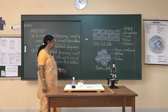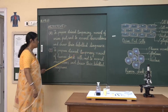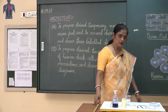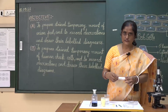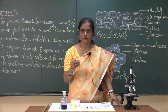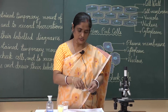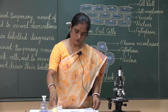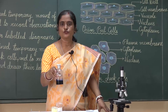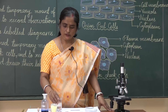Let us continue with the second part of the same objective — to prepare a temporary mount of human cheek cells and to record observations and draw their labelled diagrams. For this we need a slide, a toothpick, thin cover slips, and a stain. This time the stain is methylene blue, used to stain animal cells. A dropper and water are also required.